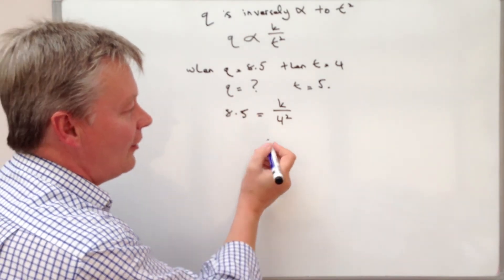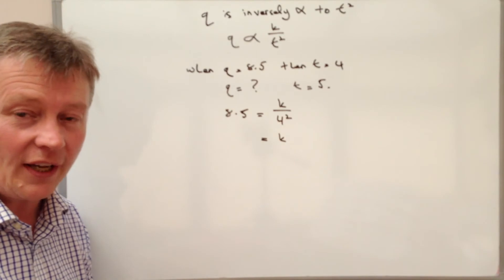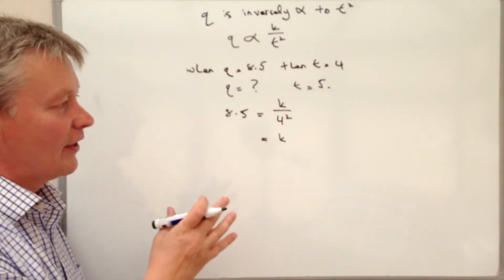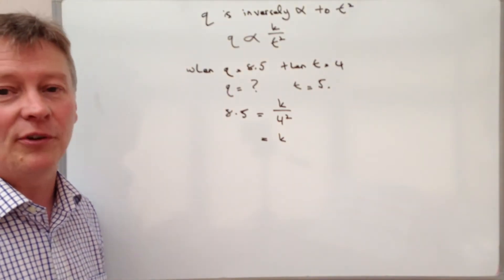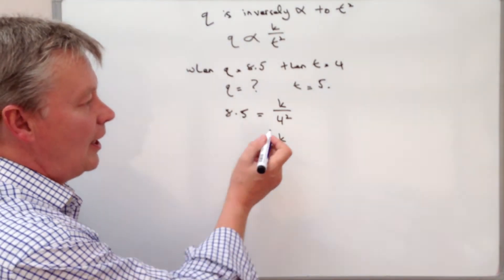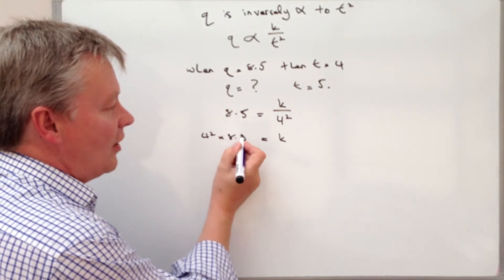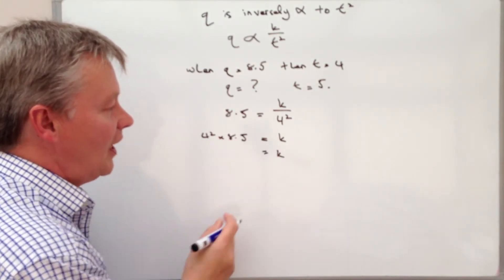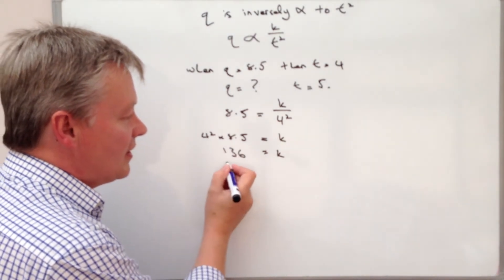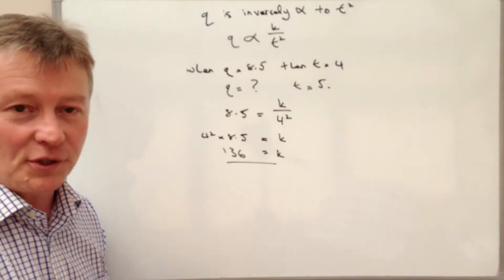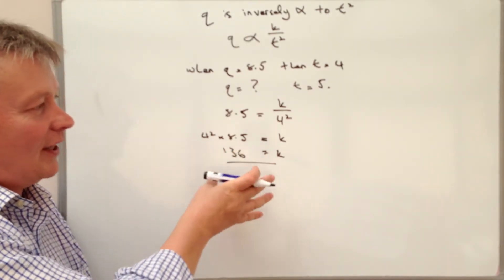So if I now isolate the value of K, I'm going to multiply both sides by 4 squared. If you're not sure how I do this, then have a look at some of the algebra videos on MathsRap or on the YouTube channel. But really I'm going to multiply both sides by 4 squared, so it means my value of K is 136. You might want to just pop that into a calculator and check for yourself, but that gives us the value of K.